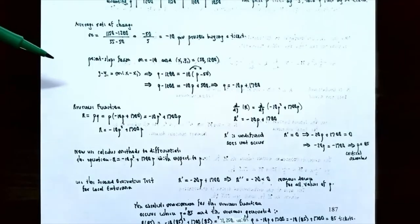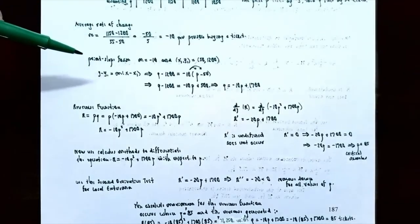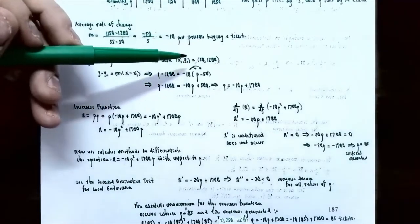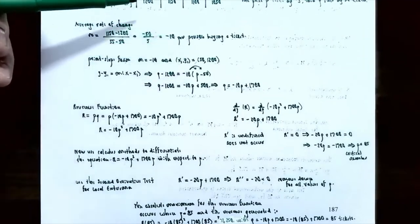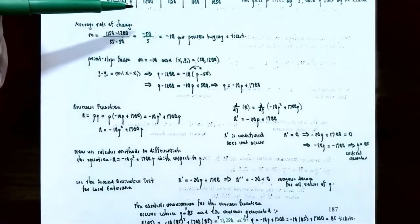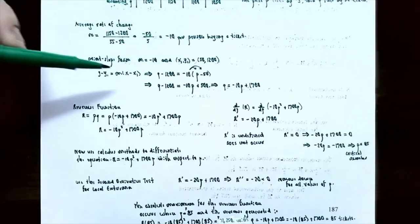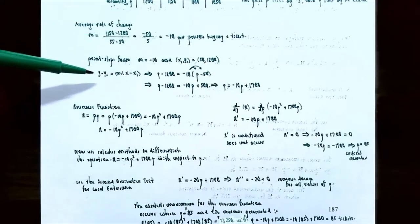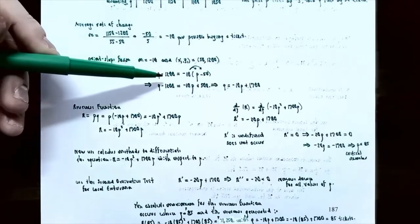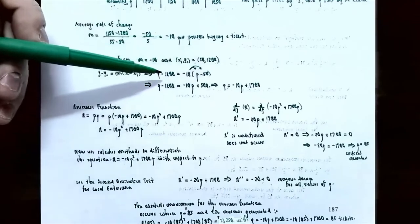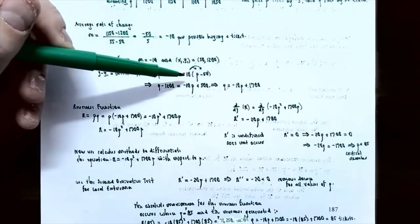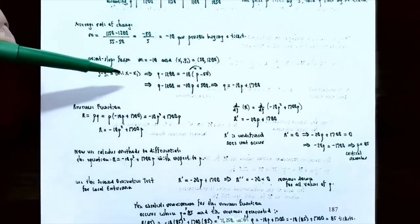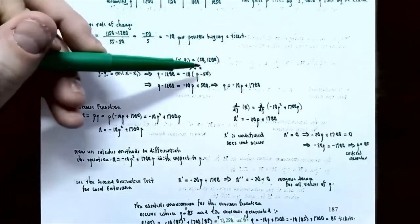Now that we know what the slope is, let's find the demand equation. We can use point-slope form with slope negative 10 and one point from the table of values. I'm going to use the first point, which was (50, 1200). So in point-slope form — y minus y1 equals slope times (x minus x1) — Q is the y because we're talking about demand, and P is the x. So: Q − 1200 = −10(P − 50).